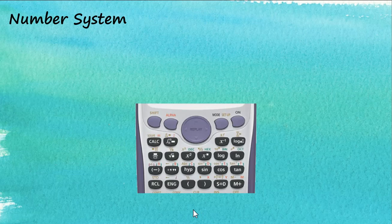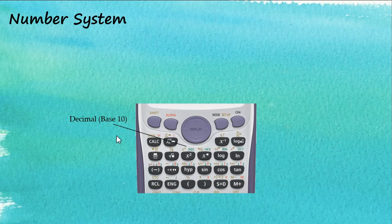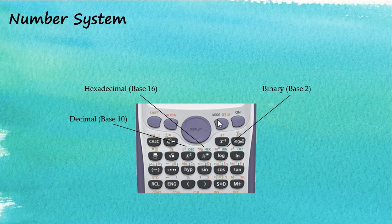The Casio FX570ES Plus calculator allows us to perform calculations with different number systems. The four number systems available are: decimal, which is base 10; hexadecimal, which is base 16; binary, which is base 2; and octal, which is base 8.